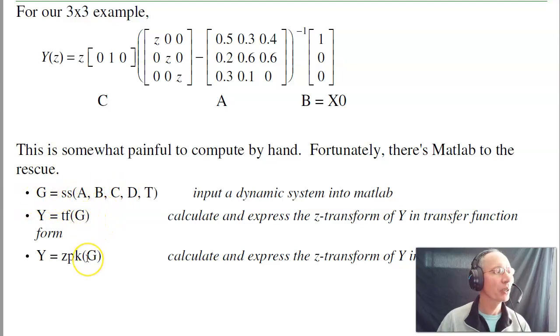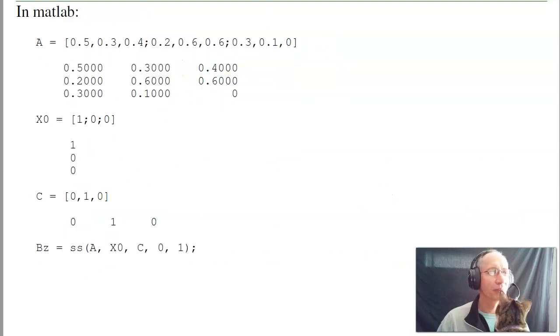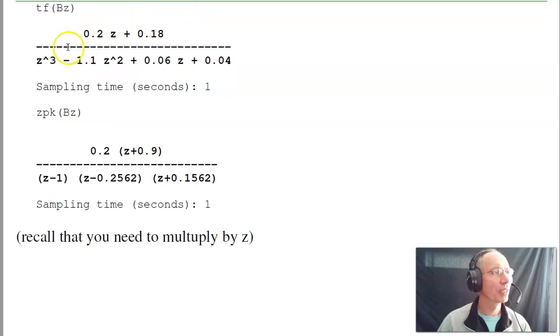Once I get the system into MATLAB, I can find the transfer function or the zeros and poles. Note, in this form, it doesn't have the z out in front, so when I'm done, I'll have to multiply the answer by z to get the actual z-transform. In MATLAB, what I would do is input the A matrix, input my initial condition, A has the ball. Look at my output, I want to see what's the probability that B has the ball. Input the system in MATLAB using state space. And then find the transfer function. Note this is off by z, I need to multiply the numerator by z, which is fairly easy to do.